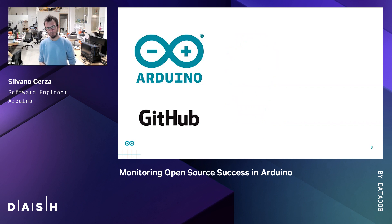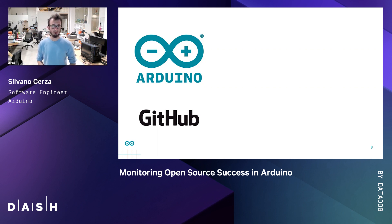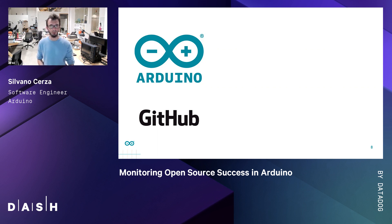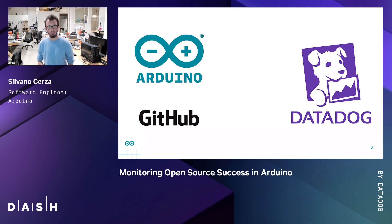But we had another problem. We have multiple distribution channels — the official Arduino website and the GitHub releases page for each of our different projects. We couldn't simply read a number and call it a day, and neither did we want to. What we really wanted was to collect this information and show how the number of downloads, and thus the success of the project, grew over time. At the time, other teams were already using Datadog to monitor our backend infrastructure, so this was settled — we knew where to get the information. We were still missing an important piece: how do we get the data from our distribution channels?